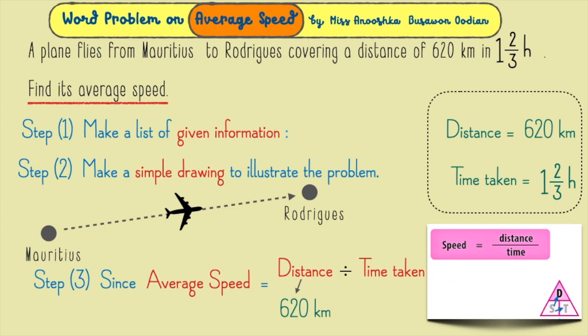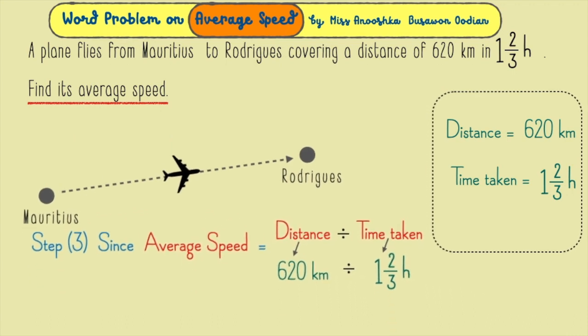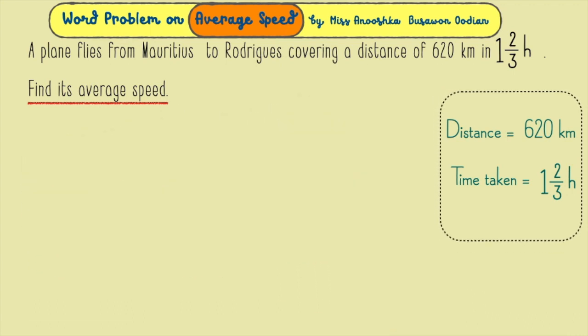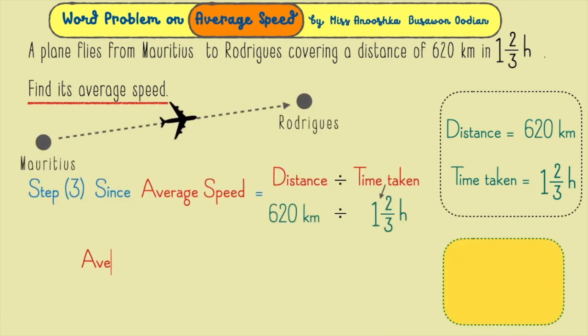So, the distance which is 620 kilometers will be divided by one and two-third hours. However, it's quite difficult to divide a number by a mixed number. In this case, the best thing to do is to change the one and two-third hours into an improper fraction.